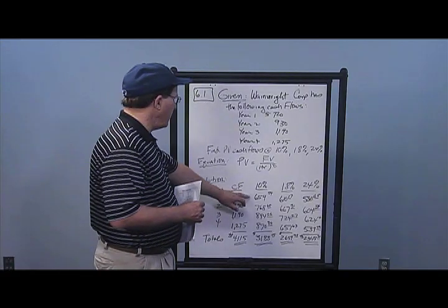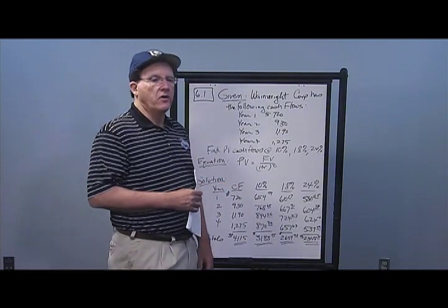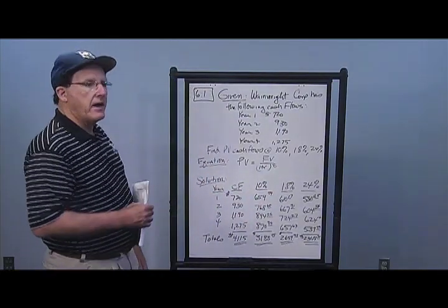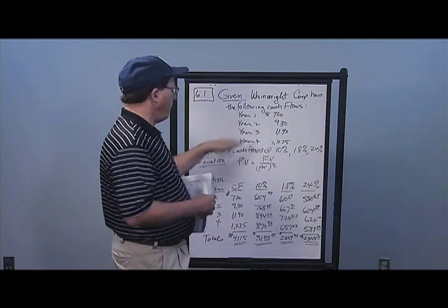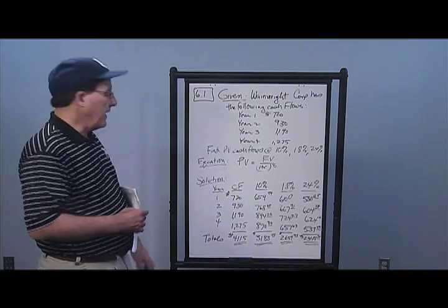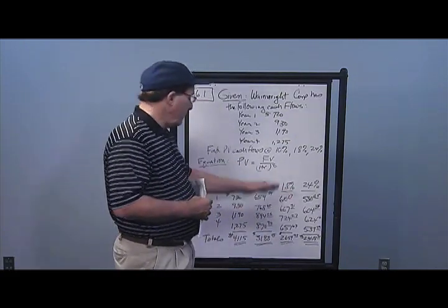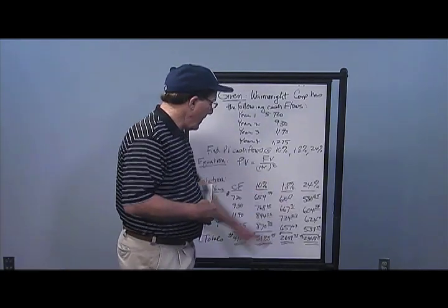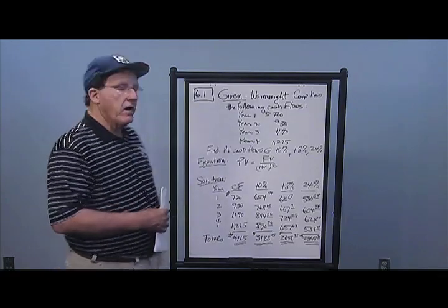I can check these numbers by taking them forward — take $654.54 times 1.1 to the first and should get $720. I'm bringing these back to today. I take each cash flow individually and bring them back one, two, three, and four years. Then I use an 18% discount rate, and in the last case a 24% discount rate. Notice that as the discount rate goes up from 10% to 18% to 24%, the present values go down. Totals are much smaller at 24% than at 10%.